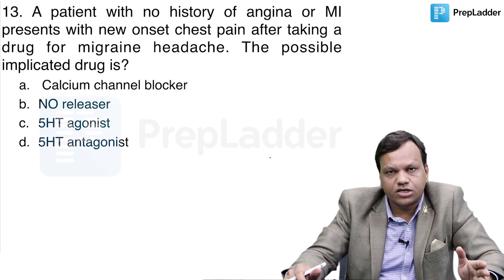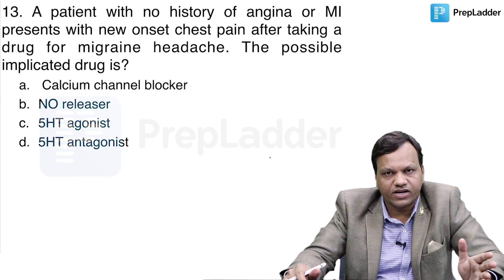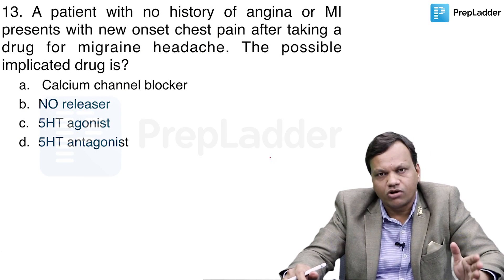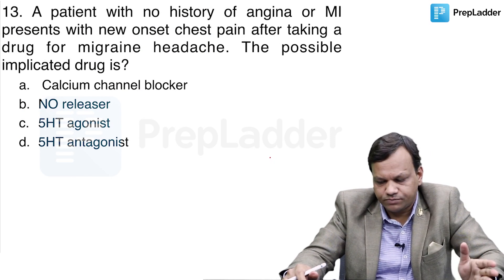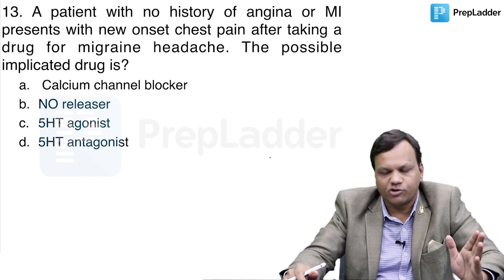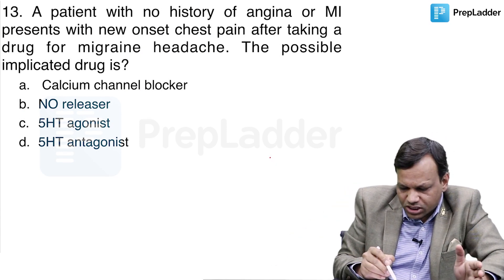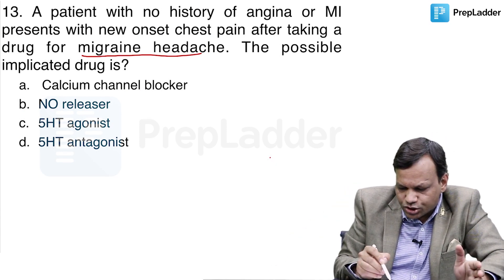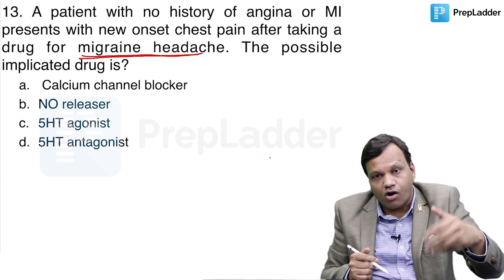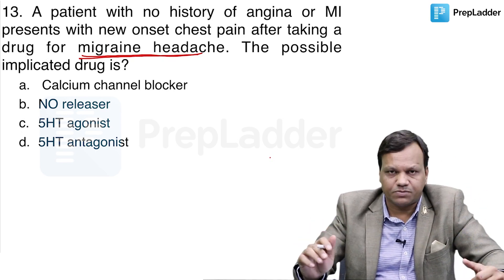A patient with no history of angina or myocardial infarction presents with new onset chest pain after taking a drug for migraine headache. The question is: which drug used in migraine can cause ischemic heart disease, or we can say chest pain?